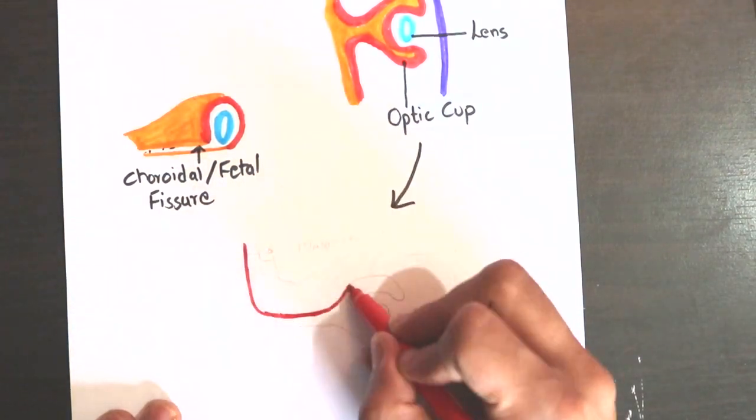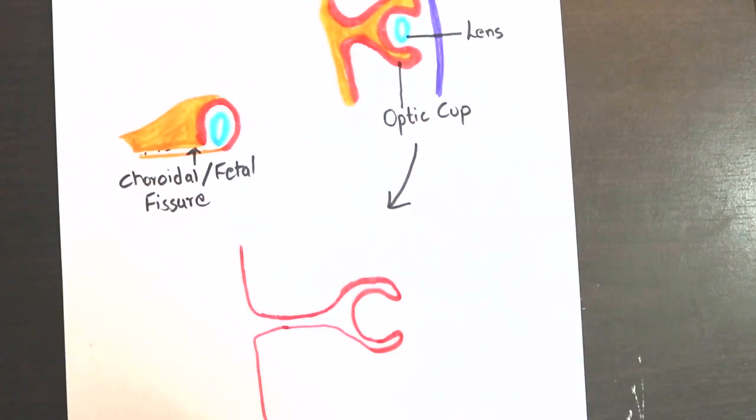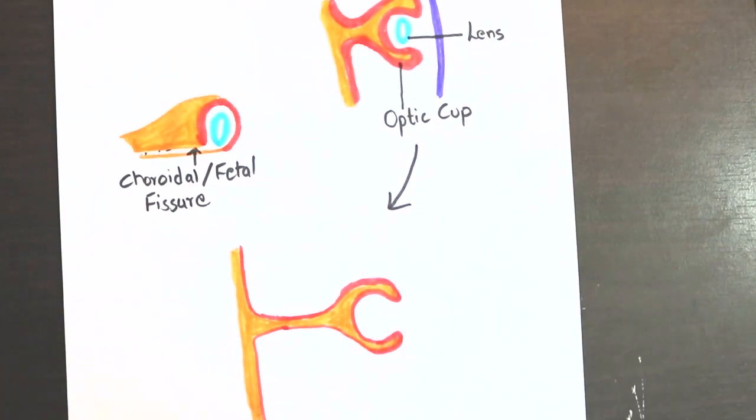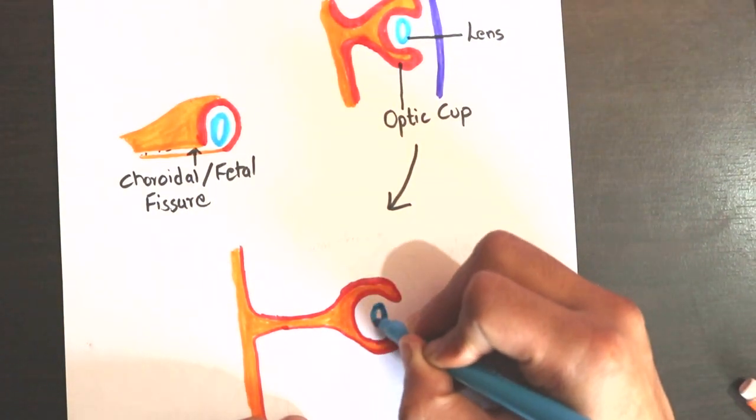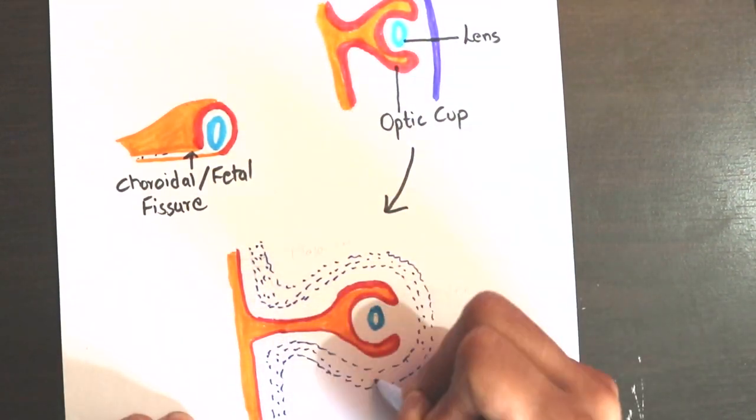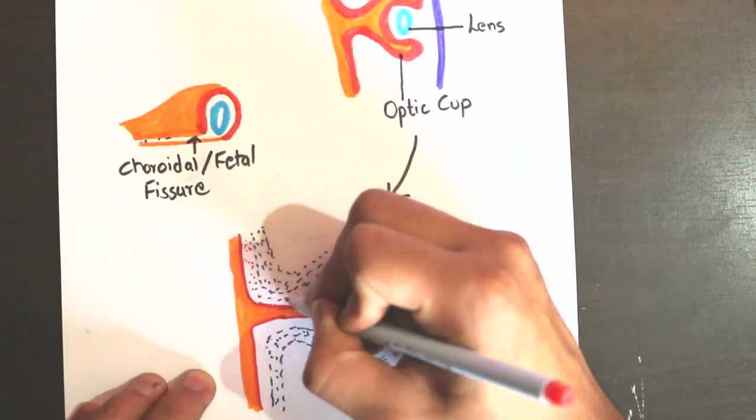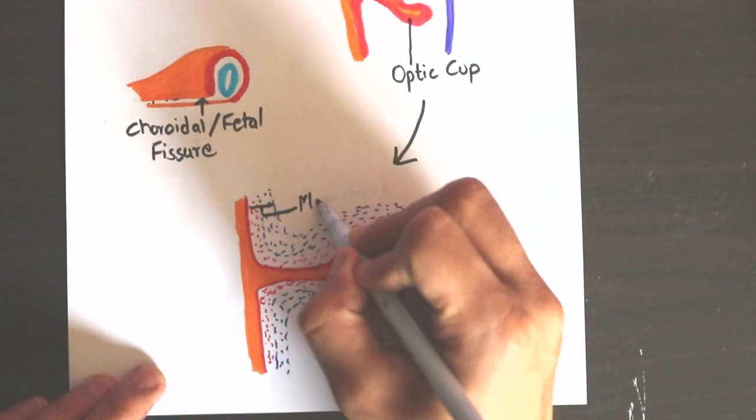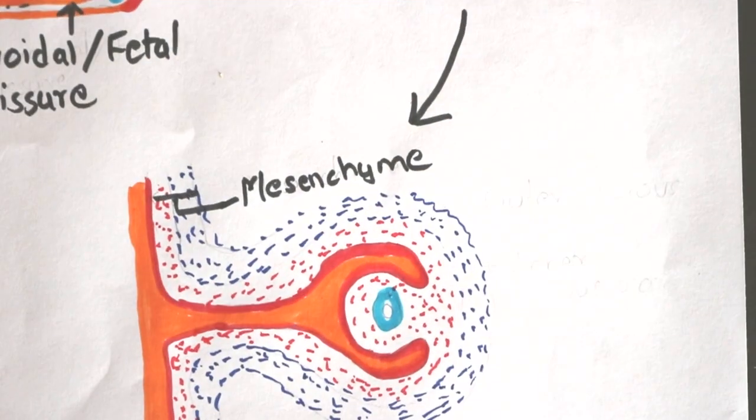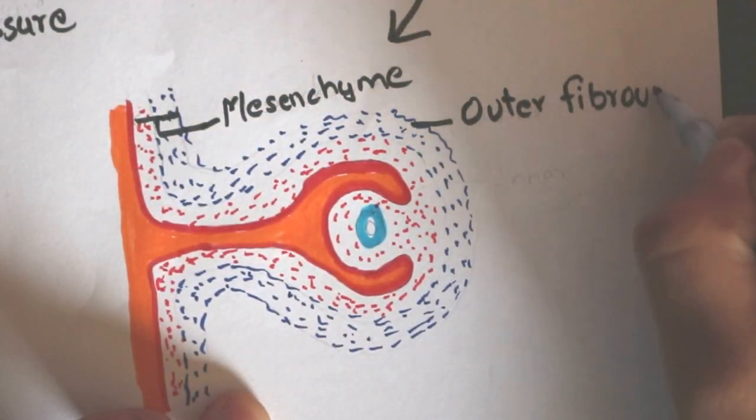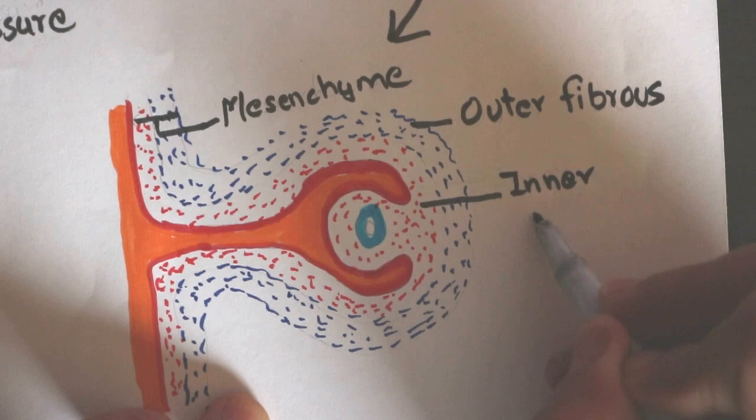The developing neural tube is surrounded by mesenchyme. An extension of this mesenchyme also covers the optic vesicle. The mesenchyme has two layers: an outer fibrous layer and an inner vascular layer.